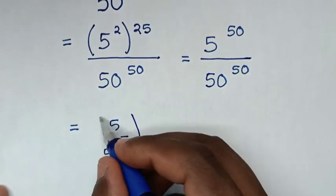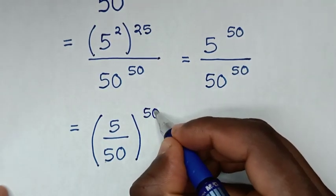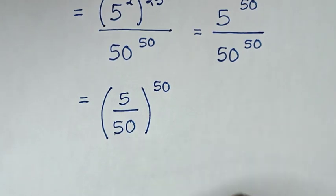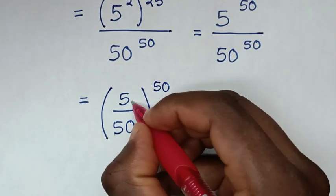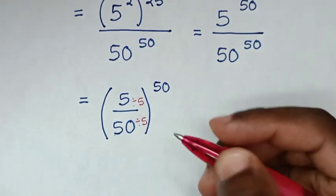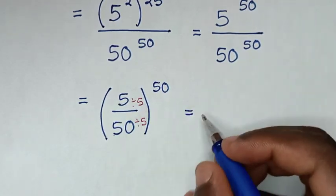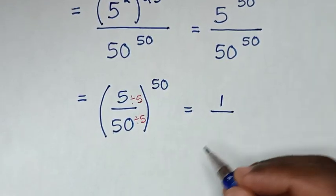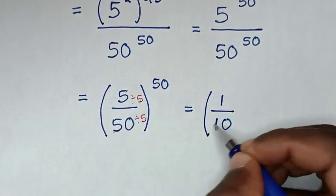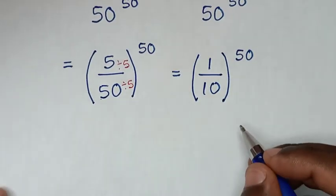Then in the next step, this 5 over 50 can be simplified. So to simplify, 5 divided by 5 and this 50 divided by 5, then it will be equal to 5 divided by 5 is 1 over 50 divided by 5 is 10, then bracket power of this 50.